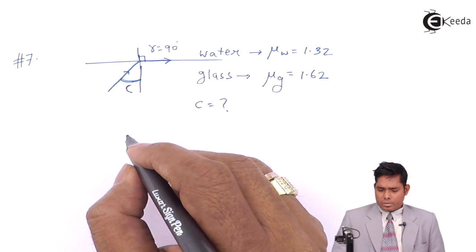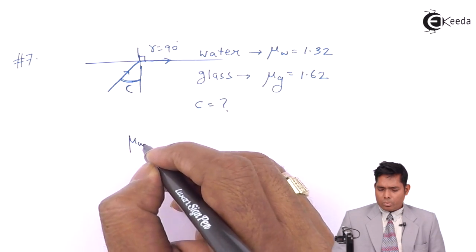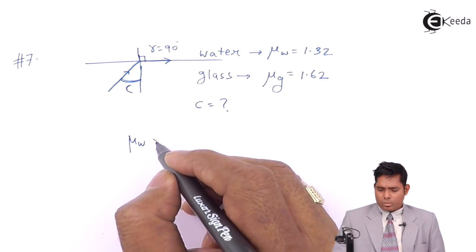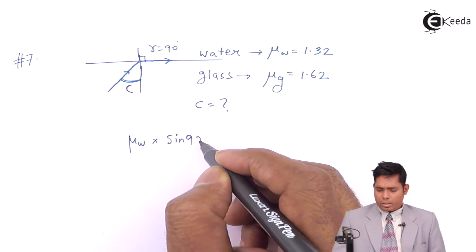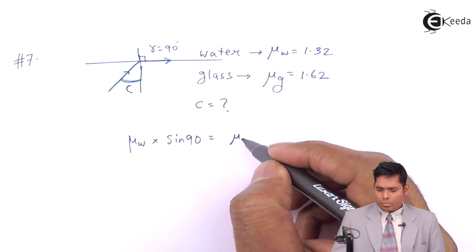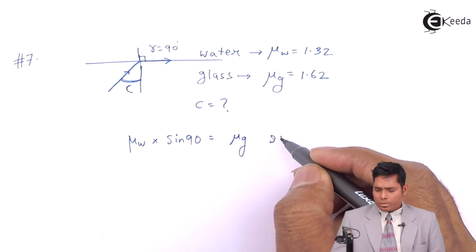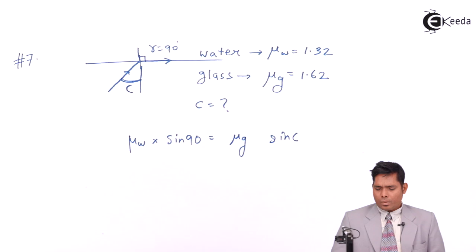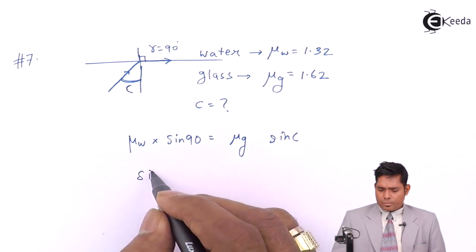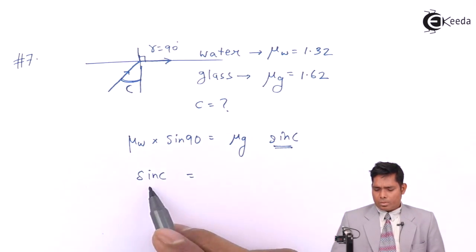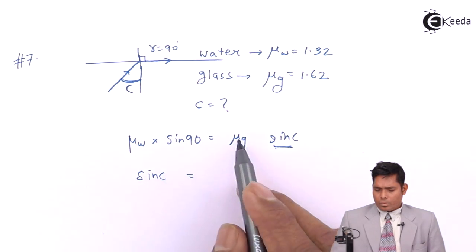That means μW, your water, times sin of 90, must be equal to μ of G, sin of this C. So from here, sin C, this value, comes out to be this divided by this, so this becomes 1.